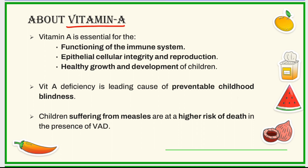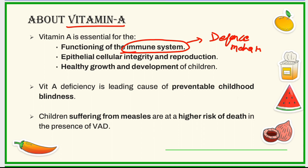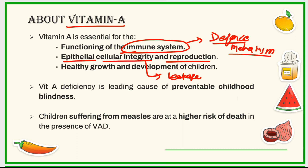Vitamin A is one of the essential vitamins for the functioning of the immune system, which is our body's defense mechanism that prevents pathogens from entering the body and helps us fight against them. Another important function of vitamin A is to maintain epithelial cellular integrity and reproduction.